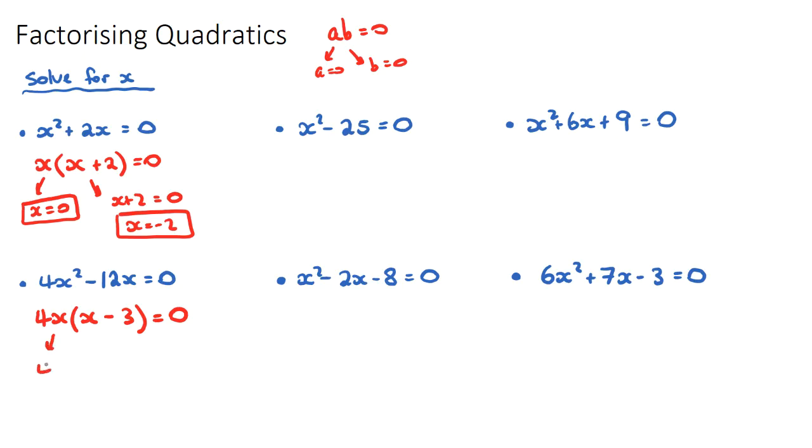Now from here, 4x can be equal to 0, as we now have our correct factorized form, or x minus 3 can be equal to 0. And then x will be equal to 0 when we divide the 4 underneath. That's one solution. And x can equal 3 is the other solution for x.